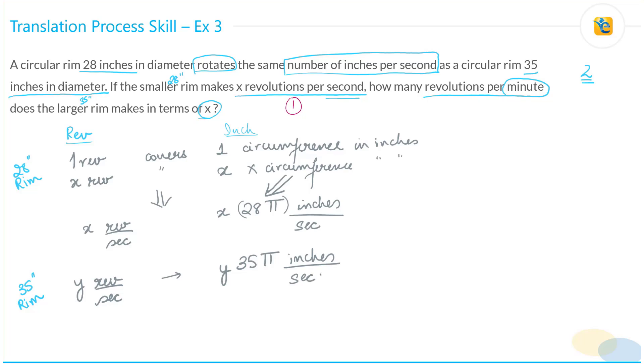What have you been given? They have the same number of inches per second. So what does that mean? I'm going to apply this information. I get that X times 28 pi equals Y times 35 pi. Pi and pi gets canceled. We needed Y in terms of X. So this implies Y equals 28 over 35 X, which equals 4 by 5 X.